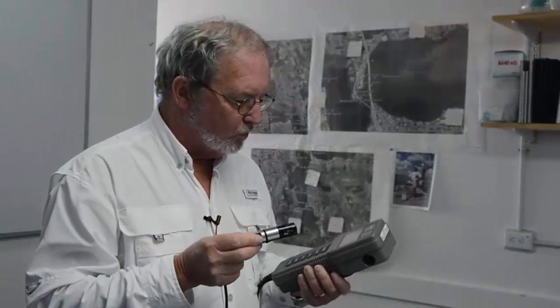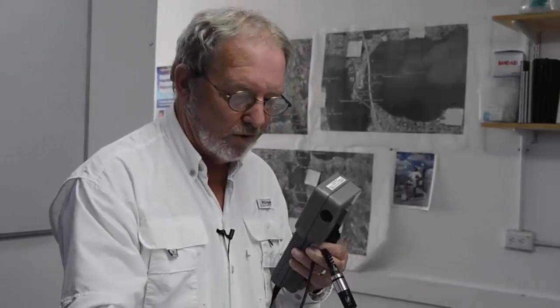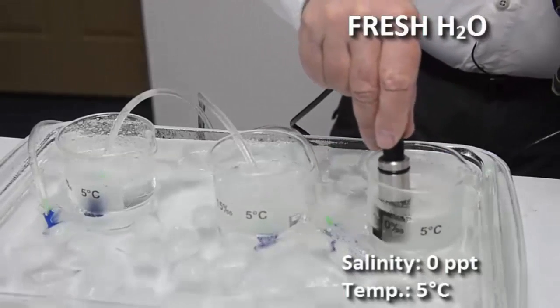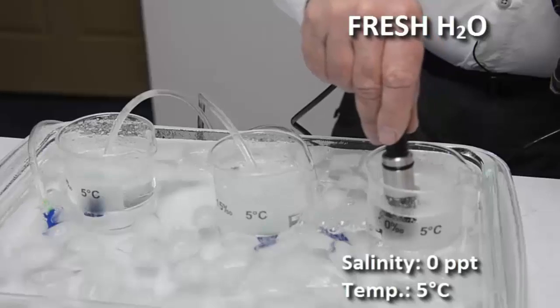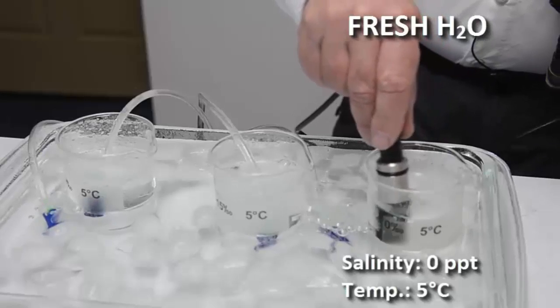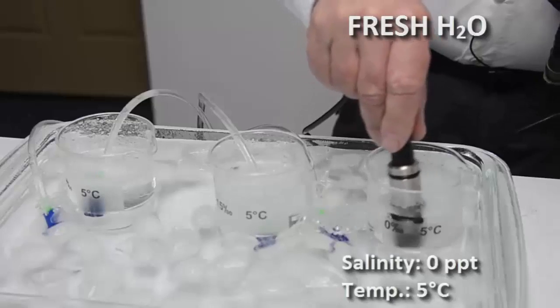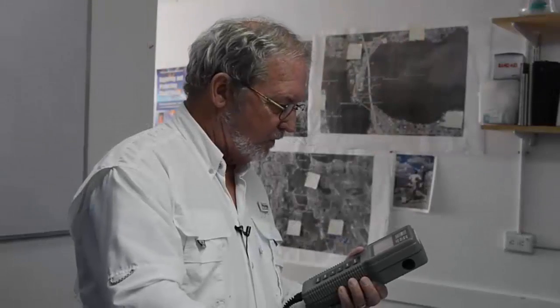So what we're going to do is start now with the fresh water and we're going to begin with cold fresh water, zero parts per thousand, five degrees centigrade. This takes a little while as you can see I slightly stirred the probe in the fresh water. Looks like we're slowing down here at 12.4 parts per million.